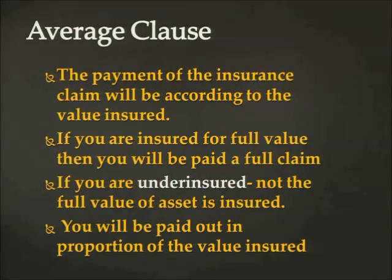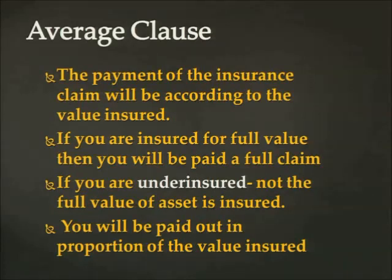Take note and be able to distinguish between reinstatement and the average clause. The average clause applies only when the property is under-insured. A calculation is then made using a formula, which I will provide so you can understand how to calculate when a property is under-insured. After a short break, we will continue with other aspects of insurance clauses, including the ion safe clause and reinstatement.